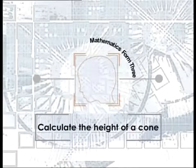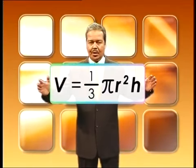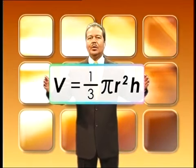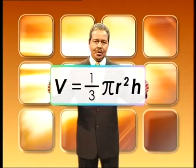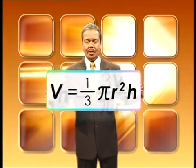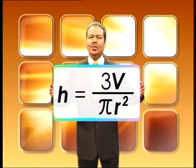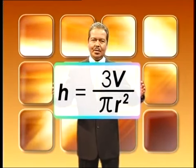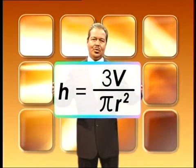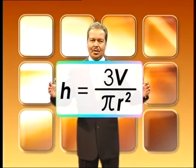To calculate the height of a cone, the formula V = (1/3)πR²H is rearranged by making H the subject, giving H = 3V/(πR²). Thus, the height of the cone can be calculated if V and R are given.